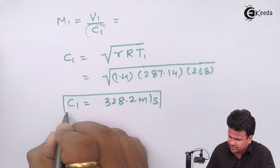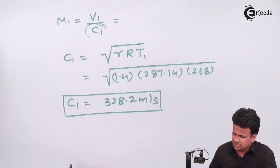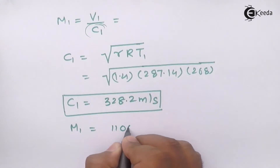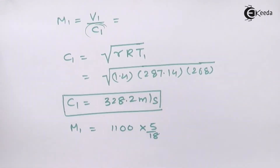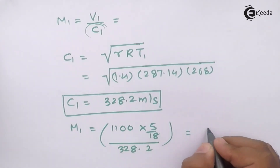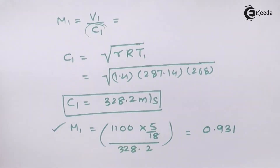That is the velocity of sound for an adiabatic process. Substituting back, the Mach number is 1100 into 5 by 18, divided by 328.2, which gives a Mach number of approximately 0.31. It is a subsonic flow — it is tending towards sonic velocity but remains subsonic. We have now calculated the Mach number.